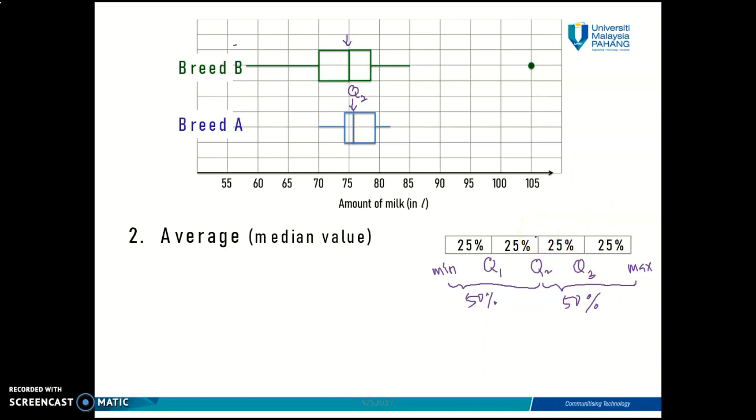Does that seem logical to you? So what does that mean? Let's take a look at the median value for Breed B. The median value for Breed B is 75 liters. What can we understand? You have learned this in the previous subtopic, chapter 1.3.3—measures of position. We are using measures of position to explain our data. We are talking about Breed B here, and the median or quartile 2 is 75 liters.